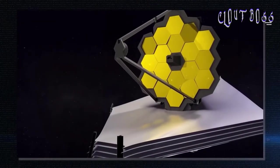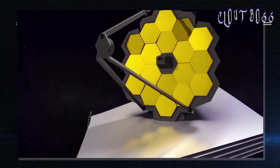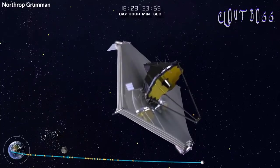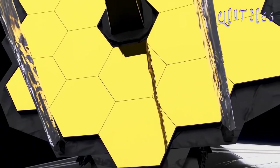JWST's huge mirror is made of 18 hexagonal segments. These unfolded and adjusted in space to form one large mirror.